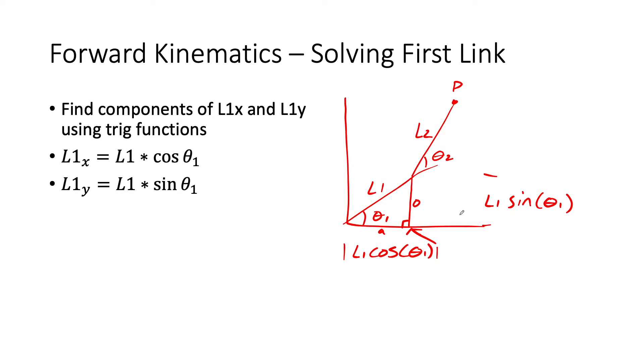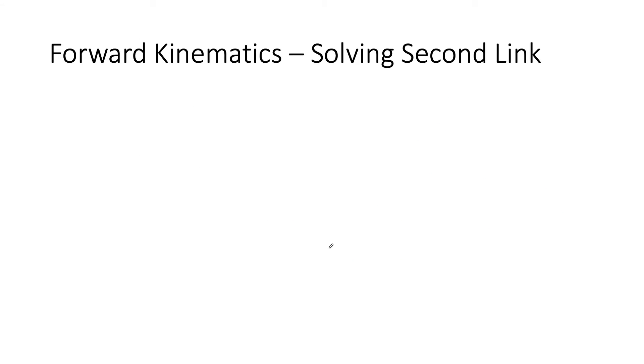Now, we're working in quadrant 1. If you were working in some other quadrant, you would need to adjust. In quadrant 2, you're going to have negative L1 cosine theta 1, but your vertical component would be the same. Whatever quadrant you are in, you will have to make adjustments. But we'll just focus on quadrant 1. Link 1 was easy. Link 2 is a little bit more involved.